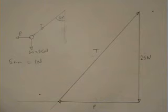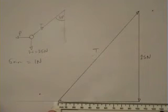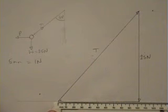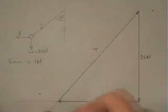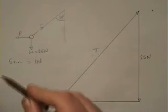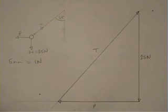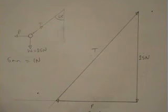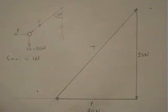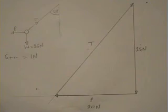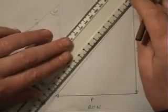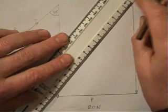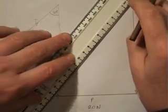We can find the values of P and T by measuring. I make the arrow for P to be 102 millimetres long, about 5 millimetres for every newton. That's near enough 20 newtons.